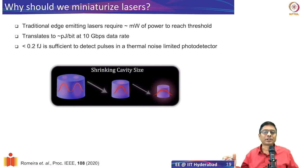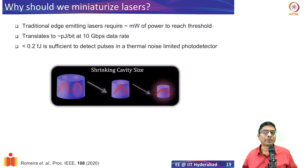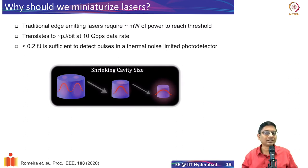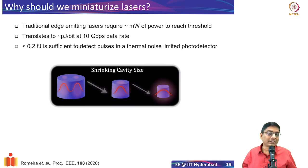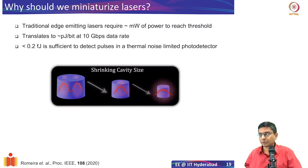If you want to transmit at 10 gigabits per second, the high laser threshold roughly translates to about picojoules per bit. Since the laser threshold is high, there is nothing you can do — you have to expend that much energy to generate and transmit the data. Even if you have a perfect interconnect, you still have to expend that energy just because the threshold is high.